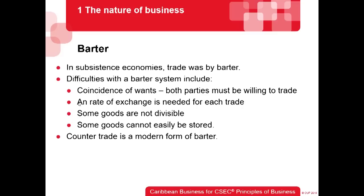Another problem with the batter system is that some goods cannot easily be stored. You harvest your products — and most subsistence economies were agrarian and agricultural-based — but you cannot really put up your produce for an extended period of time. You have to trade them as quickly as possible. But the problems with batter don't allow for easy trading. Tomatoes spoil, milk spoils, and without a refrigerator you may end up giving goods away because you can't store them.